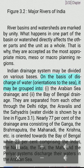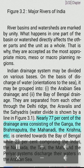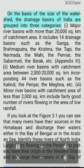The Indian drainage system may be divided on various bases. On the basis of discharge of water and orientation to the sea, it may be grouped into: (i) the Arabian Sea drainage and (ii) the Bay of Bengal drainage. They are separated from each other through the Delhi Ridge, the Aravalis, and the Sahyadris. Nearly 77 percent of the drainage area is oriented towards the Bay of Bengal, while 23 percent discharges into the Arabian Sea.